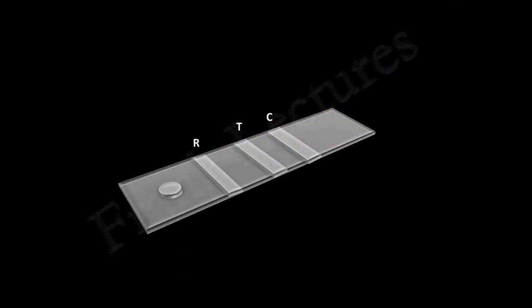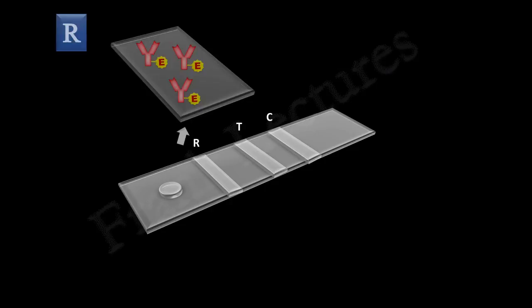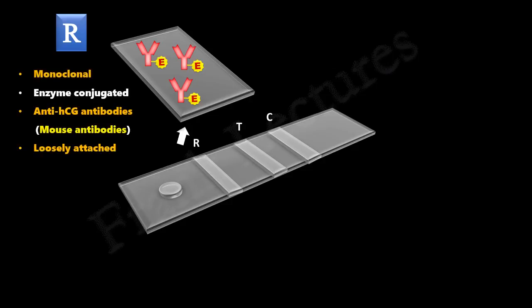This is a pregnancy strip having three zones of function. The reaction zone is made up of monoclonal, enzyme-conjugated, anti-HCG antibodies. These antibodies are also known as mouse antibodies, and they are loosely attached to the strip.